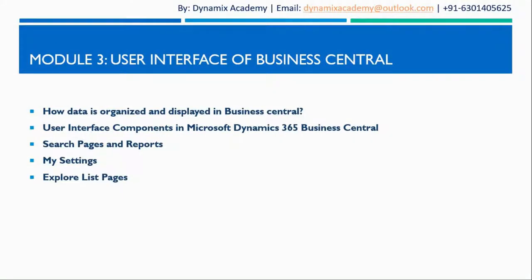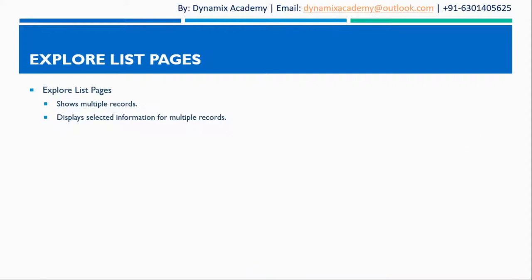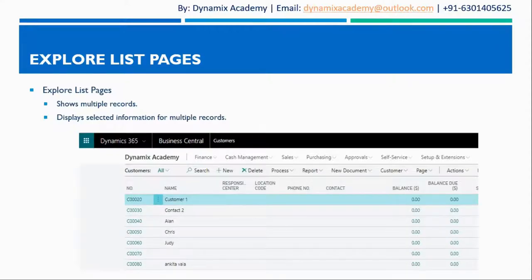Hello everyone, welcome back to the Microsoft Dynamics 365 Business Central introductory course. This is lecture 5 of the third module, where we will explore more about list pages in Dynamics 365 Business Central. In the previous lecture we covered the My Settings area, and in this lecture we will take a closer look at list pages. Let me now open the trial instance.